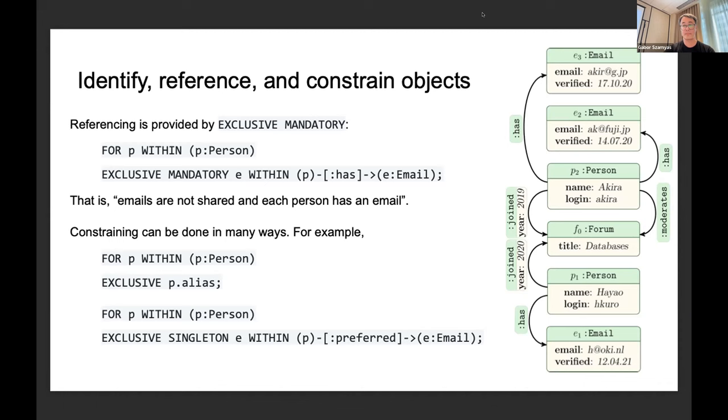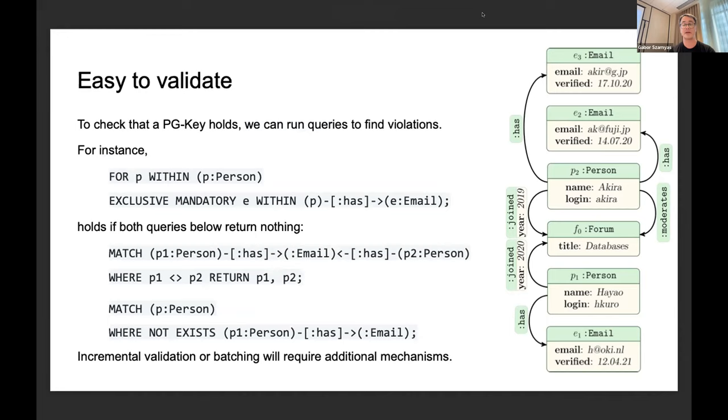Finally, the design requirement on ease of validation. In order to check a PG-Key holds, you just use the underlying query engine. You run queries in the local language to find violations. For example, this exclusive mandatory constraint on people nodes, that every person has an email, at least one, and they're exclusive to the person. This will hold if both of the following queries return nothing. The first checks that there are no two people that have the same email, that's the exclusiveness part. And it's not the case that there's a person that doesn't have it, so we check for violations of the mandatory constraint.